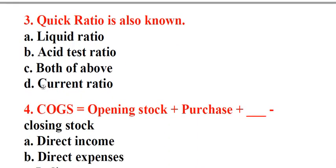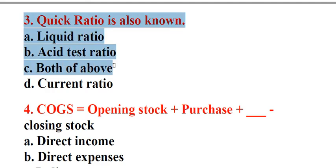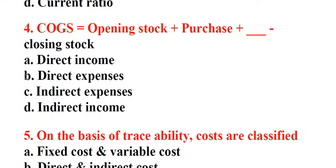Question 3: Quick ratio is also known as. A. Liquid ratio, B. Acid test ratio, C. Both of above, D. Current ratio. Answer: C. Both of above. Question 4: COGS equals opening stock plus purchase plus underscore minus closing stock. A. Direct income, B. Direct expenses, C. Indirect expenses, D. Indirect income. Answer: B. Direct expenses.